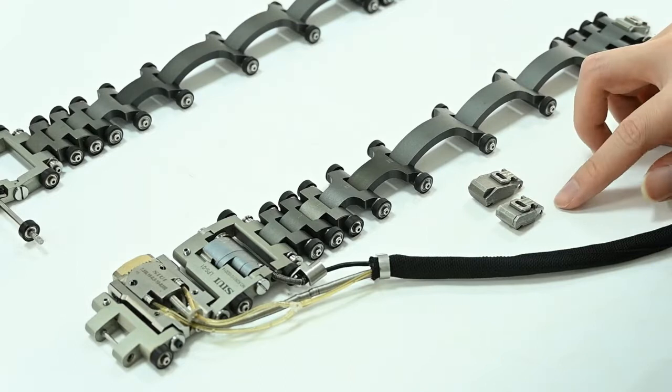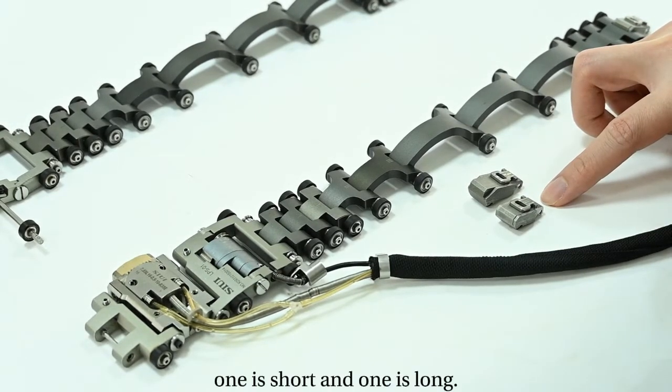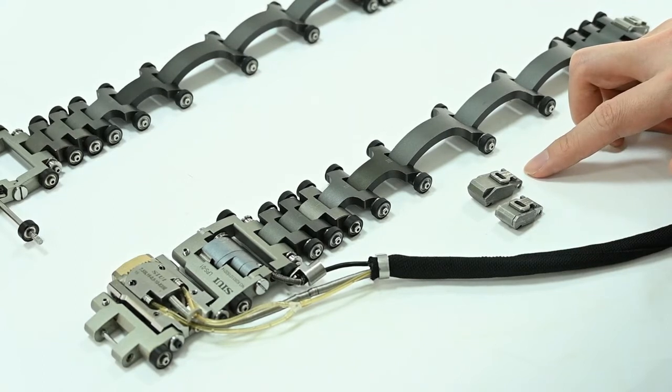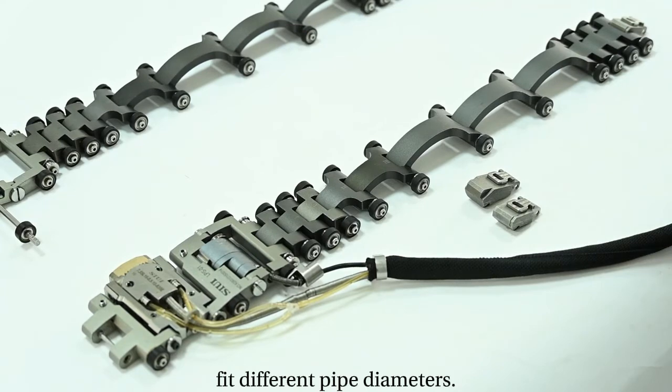Actually, we have two different hooks - one is short and one is long. All this makes it possible to fit different pipe diameters.